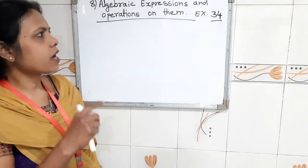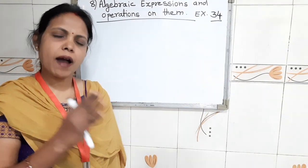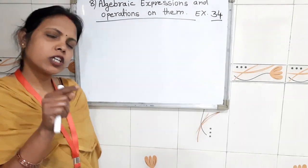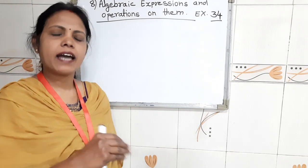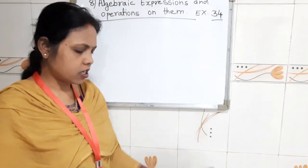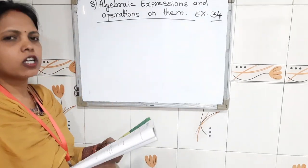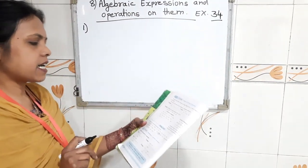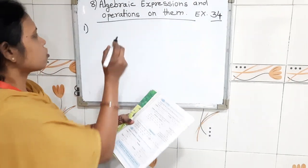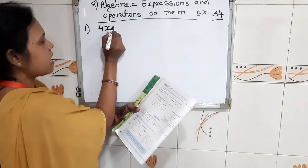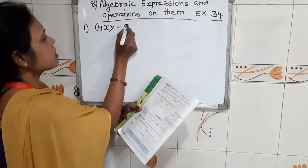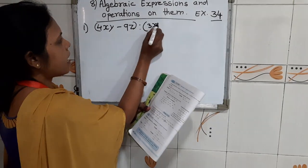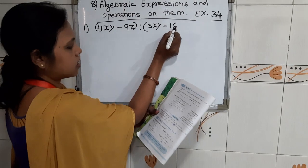After that, we had learned adding binomial terms and trinomial terms. So children, in our exercise 34, question number first is given: subtract the 2nd expression from the 1st. The question is: 4xy minus 9z, and the 2nd term is 3xy minus 16z.